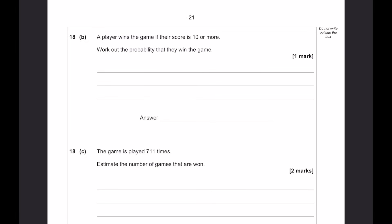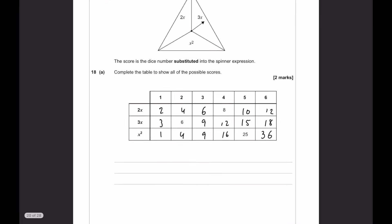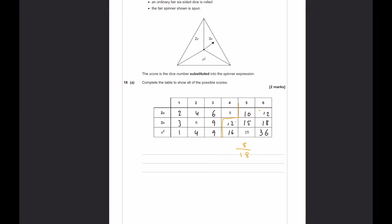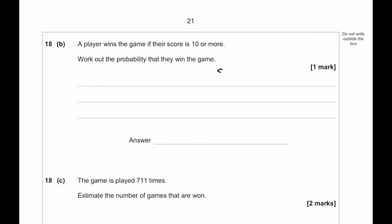So, a player wins the game if their score is 10 or more. Work out the probability that they win the game. Now, if we go back to here, effectively, we want to count how many are 10 or more. So, you can see that is literally just this section over here. So, 1, 2, 3, 4, 5, 6, 7, 8. And that is out of a total of 18. So, it's going to be 8 over 18. And if we want to simplify that just for good practice, 4 over 9.